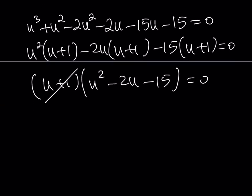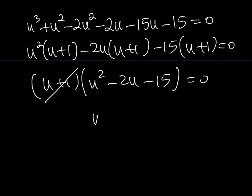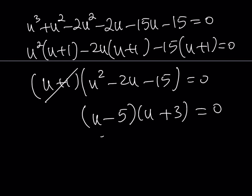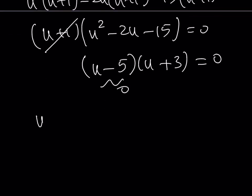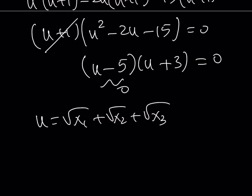Factoring: u minus 5 times u plus 3 equals 0. Successfully, u equals 5, which is the sum of square root of x1 plus square root of x2 plus square root of x3. That's our answer.